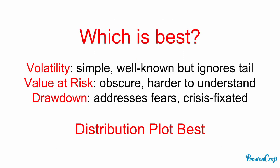So which one is best? Volatility is extremely simple and well known, but it's a symmetric measure — it ignores the tail. Value at risk is a bit more obscure and harder to understand, but at least it focuses on the tail, and that's what many investors are concerned about. Drawdown is the most cautious measure of all three — it addresses investor fears of losing their money, but it is crisis-fixated. It always focuses on the worst case scenario and may make you too cautious, which could make you miss out on the upside. But in fact, all three of these measures are summaries. The best thing you can do is to look at the full distribution of returns, because that tells the whole story.